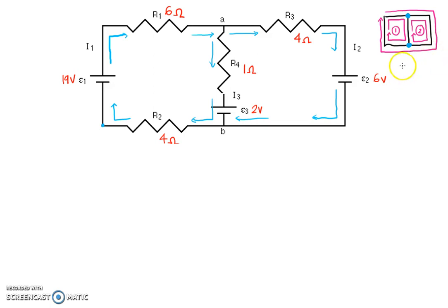Now, to solve this problem, here's what I'm going to tell you: to solve, you need two loops plus one junction. That's what you need. Notice I've got three loops, so I could create three equations. Let me tell you this, you don't need it. What you need are two loops and one junction.